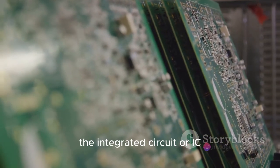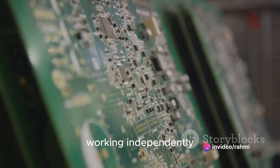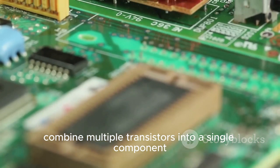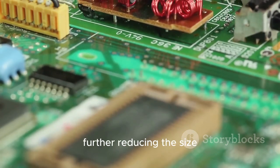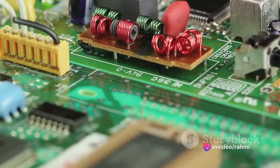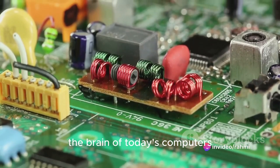The integrated circuit, or IC, was the brainchild of two engineers working independently, Jack Kilby and Robert Noyce. This compact device combined multiple transistors into a single component, further reducing the size, cost, and power requirements of computers. The IC was the precursor to the modern microprocessor, the brain of today's computers.